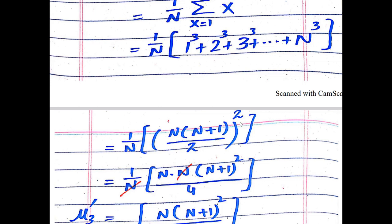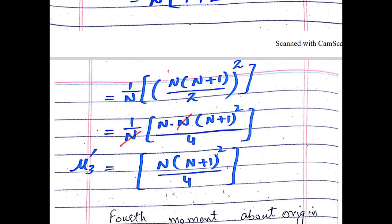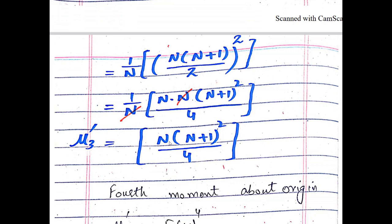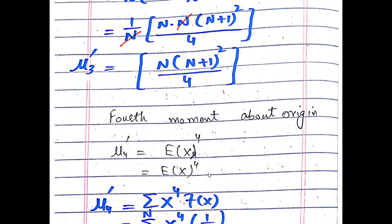Expanding, we write N·(N+1)²/4. The N in the numerator cancels with the N in the denominator, leaving the final answer: μ₃' = N(N+1)²/4.